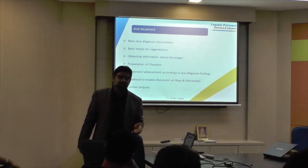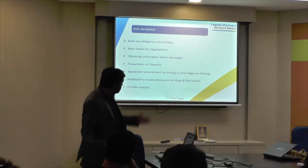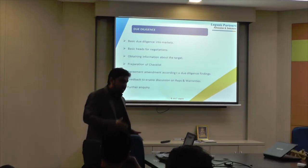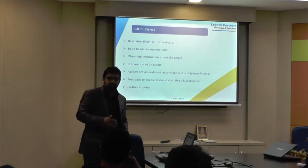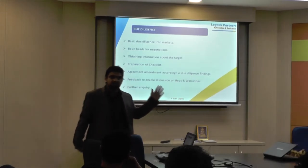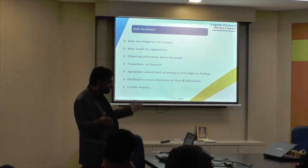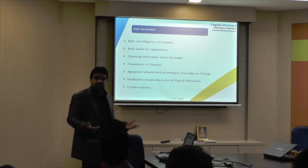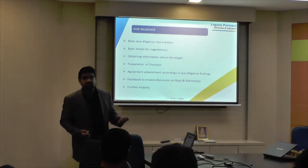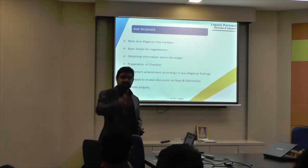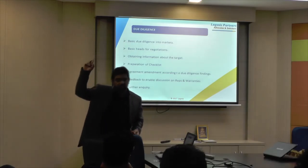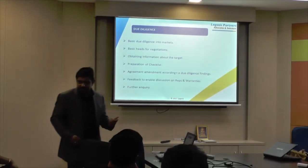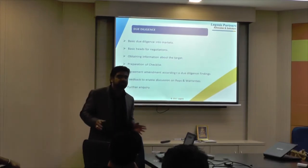A due diligence usually results in the final investment agreement being modified significantly. One thing that will happen is the investor will seek representations and warranties — basically guarantees from startup founders. Basic representations always asked for include: we are conducting business in compliance with applicable laws; all our agreements are properly stamped and arrangements properly documented; the founders are the only shareholders and there is no other shareholder; there is no one who owes money to us; there are no other arrangements apart from those disclosed. These are the kinds of things an investor will look into. They often come back and ask: is there anything else you would like to disclose?